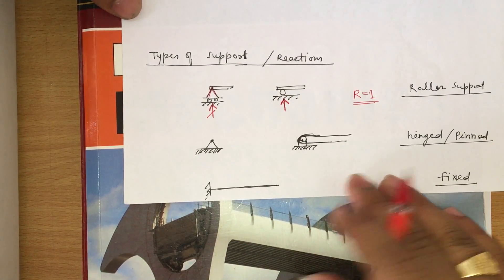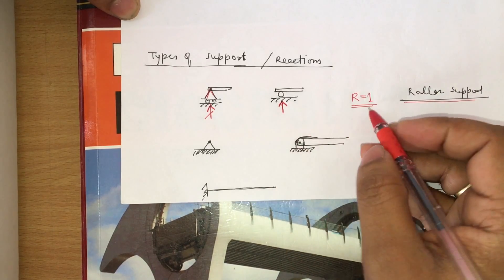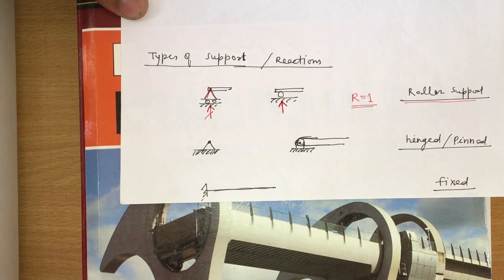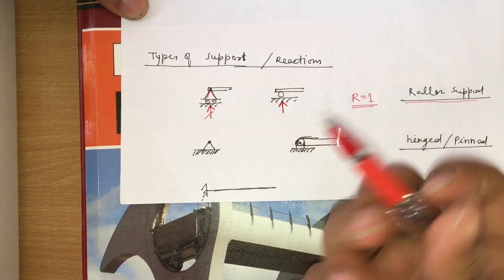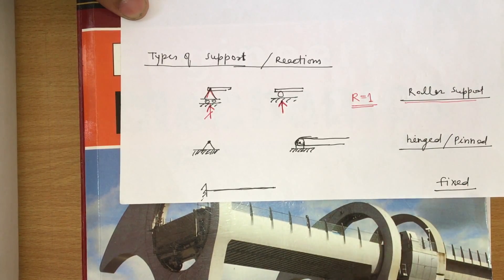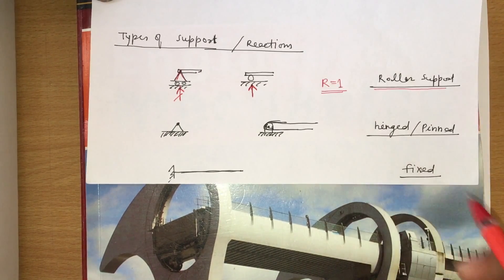So R is equal to 1 — only one reaction will come in the case of roller support. It can be used in a beam or anywhere, like a wheel. The roller support can give only a vertical reaction; there is no horizontal reaction, which is why it can move horizontally.